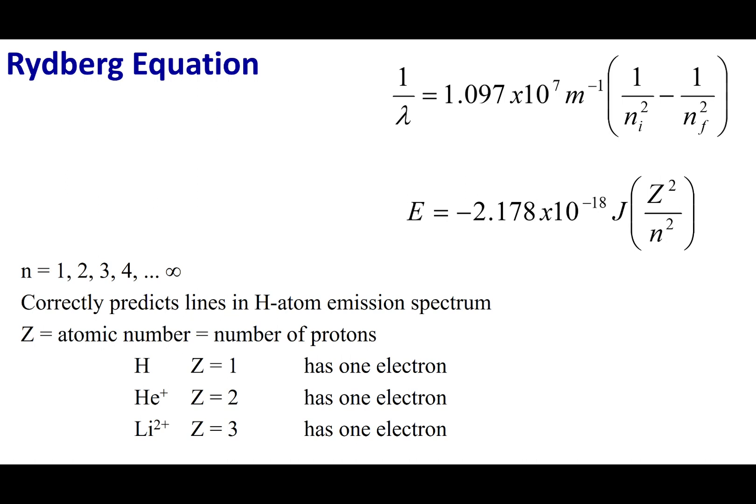What you might recall from the last lecture is we got a line spectrum out of our hydrogen emission. Now one thing scientists can try to do is predict where these lines are going to appear, or they can model the existing lines and try to fit it to an equation. And that's exactly what Rydberg did — he took the emission lines out of the hydrogen atom and fit it to an equation. This is the Rydberg equation.